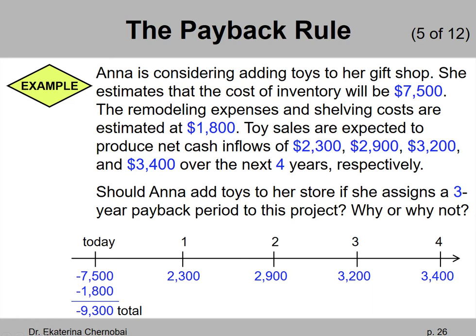On our timeline, we have negative $9,300 for today, or year zero. We have $2,300 in one year, $2,900 in two years, $3,200 in three years, and $3,400 in four years.